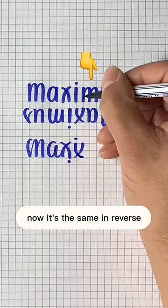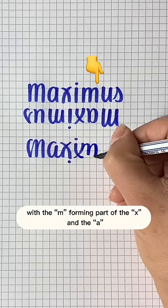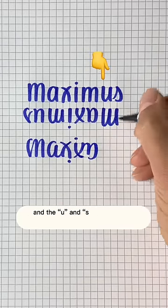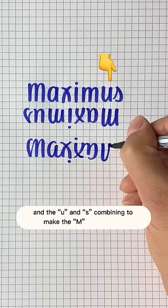Now it's the same in reverse, with the M forming part of the X and the A, and the U and S combining to make the M upside down.